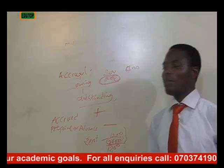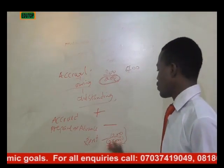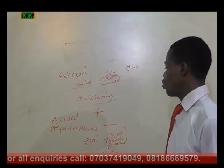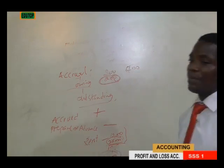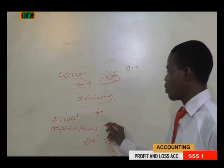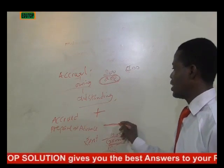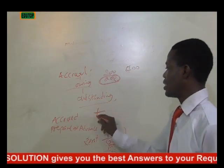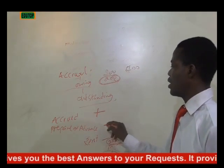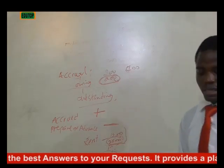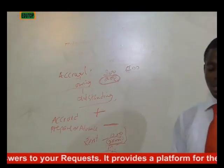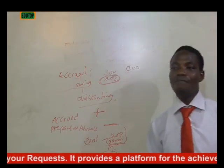Accrued expenses are when you are owing and have not paid — to your worker, for electricity, or any form of expense. If you are given accrued expenses you add them to the current figure, and any prepaid expenses you deduct. That is how we treat accrued and prepaid expenses.